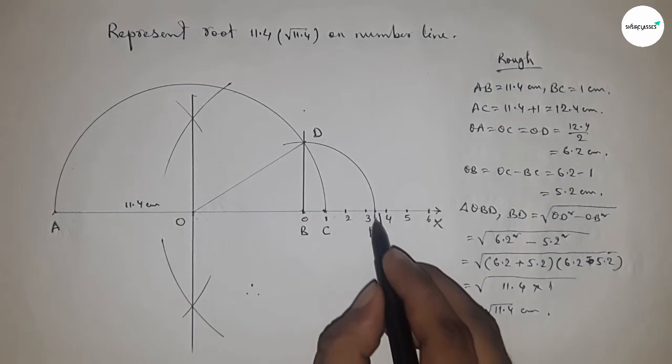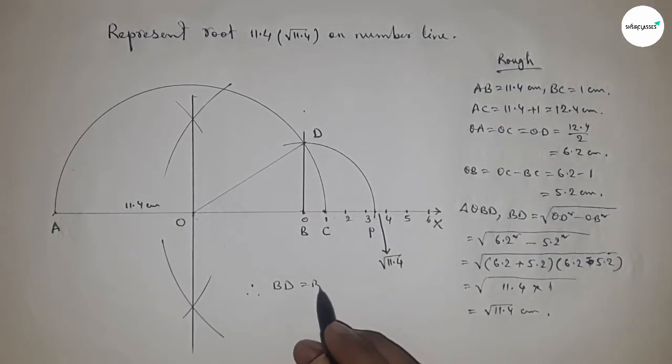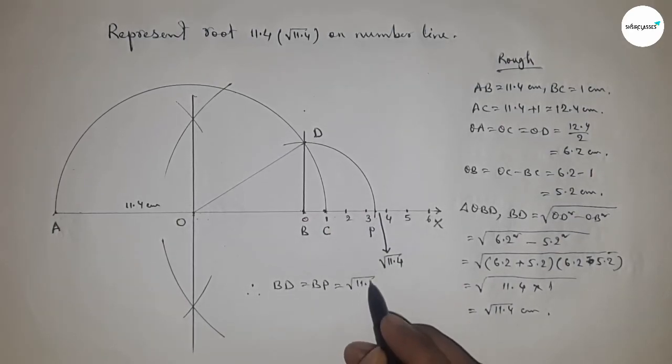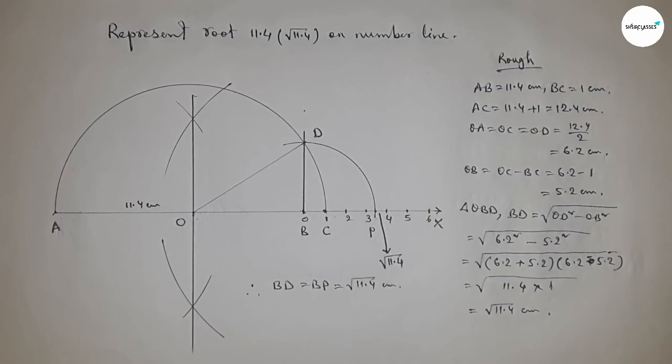Therefore, distance BD and BP are equal to √11.4 centimeter. That's all. Thanks for watching. Please subscribe, like, and comment on my video.